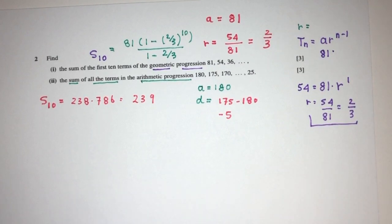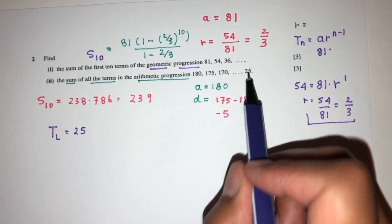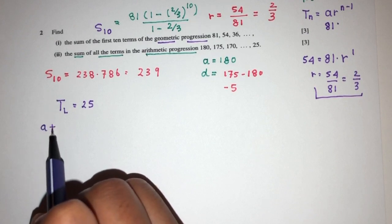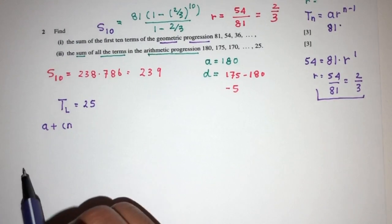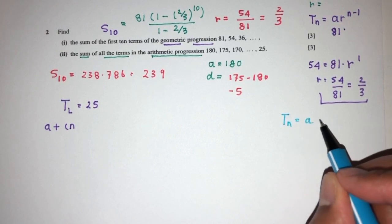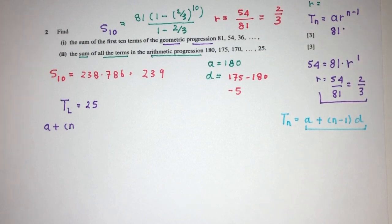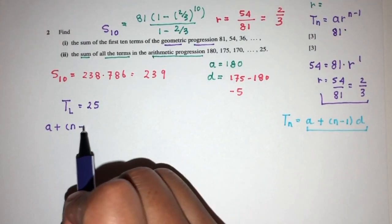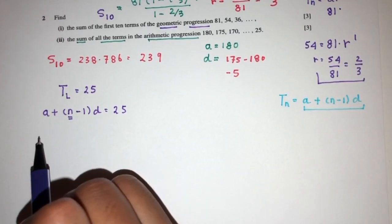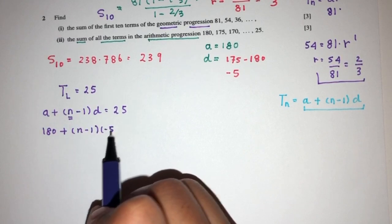Now we have to know how many terms do we have in this progression. So we know that the last term, let's call the last term is equal to 25. So what is the term of 25? We know that the n term is given to you by the formula, which is A plus N minus 1 times D. Let me write this down because we might forget. So the n term, that will be A plus N minus 1 times D.